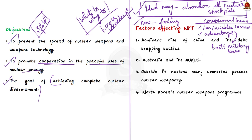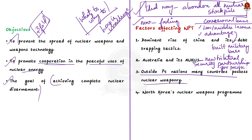The second case involves Australia and AUKUS — a new trilateral security partnership between Australia, the UK, and the US for the Indo-Pacific region. Through AUKUS, Australia will acquire nuclear-powered submarines from the US and UK to counter China. The third case is the expansion of nuclear weapons beyond the P5 nations — India and Pakistan are known to possess nuclear weapons, and Israel is strongly suspected of possessing them.